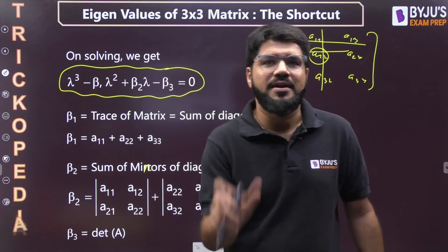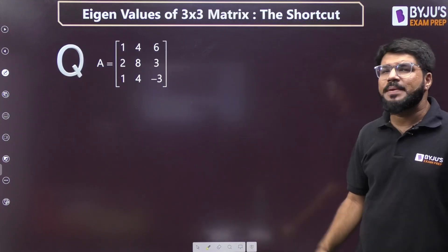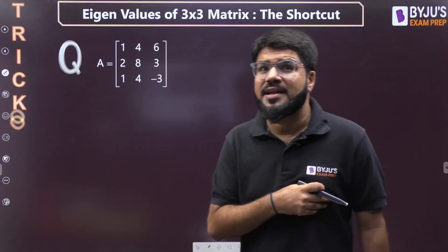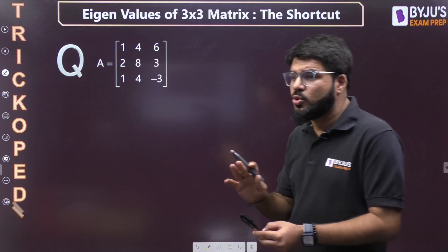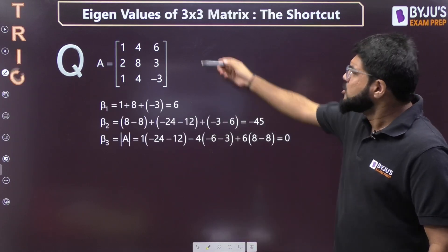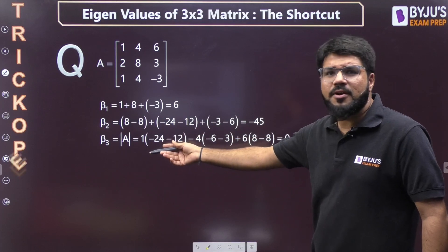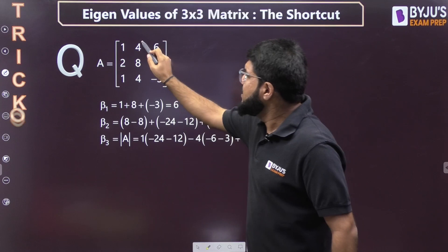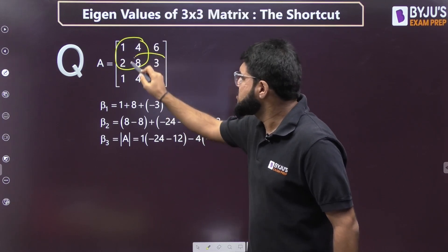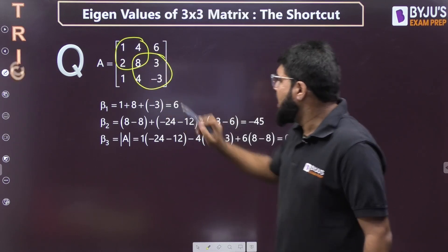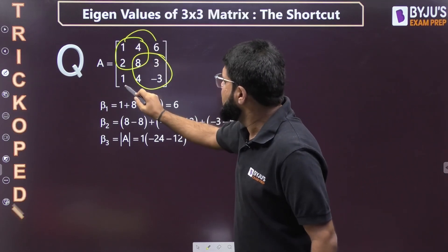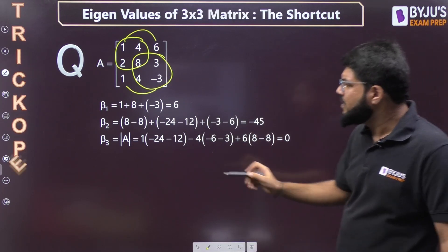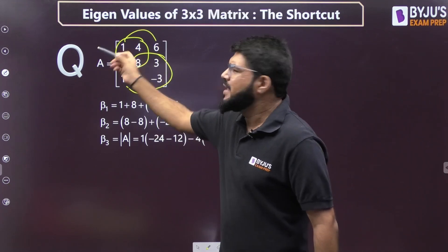Let's quickly apply this to a problem. Virtual calculators are now allowed in GATE, and they don't have cubic equations, so I'll tell you accordingly. You can compute β₁, β₂, β₃. Sum of diagonal elements: 1 + 8 + (-3) = 6. Sum of the minors: 8 - 8, next -24 and -12, then -3 - 6. This equals -45.